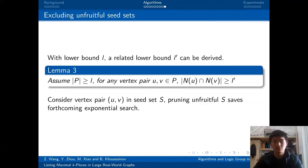As for listing maximal large k-plexes with a lower-bound L, we can derive a related lower-bound L prime. That is, for any vertex pair u and v in P, the number of u and v's common neighbors is no less than L prime. To use this constraint, we can consider the vertex pair u and v in some seed sets. If the vertex pair cannot meet the constraints, we can drop this seed set and save the forthcoming exponential search.